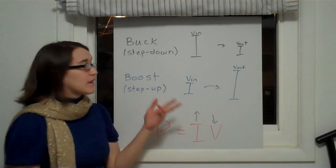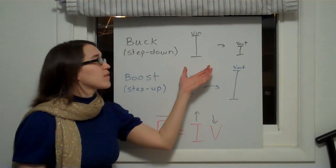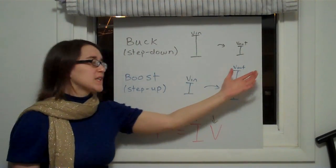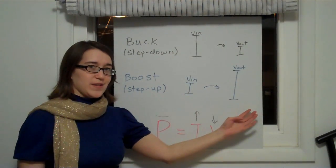The two topologies we'll work with today are the buck converter, a step down, so it brings a higher voltage to a lower output voltage. And the boost converter, or the step up, which brings a lower voltage to a higher voltage.